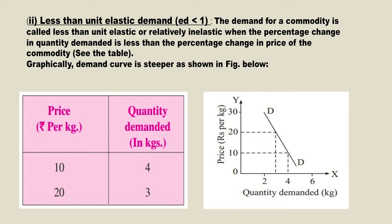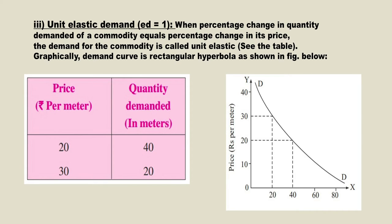The third case is elasticity of demand equal to 1. Here there is an equal proportionate change in quantity demanded to a change in the price of the commodity. When the price decreases by 10 percent, the quantity demanded increases by 10 percent. From the table, the price increases from rupees 20 to 30 and the quantity demanded decreases from 40 to 20 — a proportionate change in both.